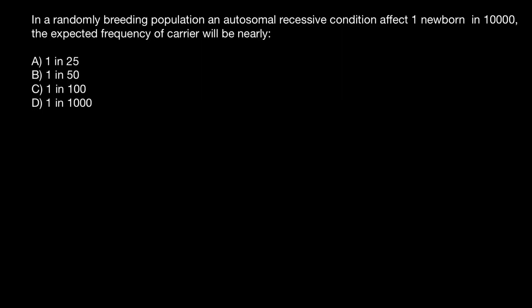Hello and welcome to Nikola's Genetics Lessons. Today's problem is: in a randomly breeding population, an autosomal recessive condition affects one newborn in 10,000. The expected frequency of the carrier will be nearly - and you have to choose the correct answer.